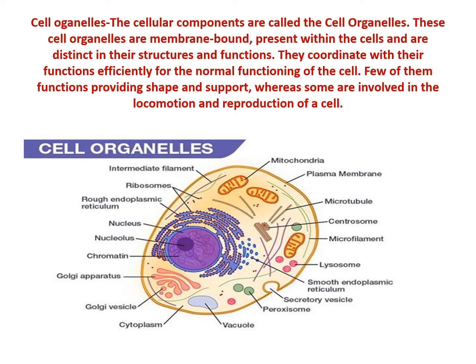A cell mainly consists of three essential parts: cell membrane, which is also known as plasma membrane, nucleus, and cytoplasm. The cellular components are also called cell organelles. These cell organelles are membrane bound, and there are few which do not have a membrane around them. They are present within the cells and distinct in their structures and functions. They coordinate their functions efficiently for the normal functioning of the cell. Few of them function in providing shape and support, whereas some are involved in locomotion, reproduction, etc.